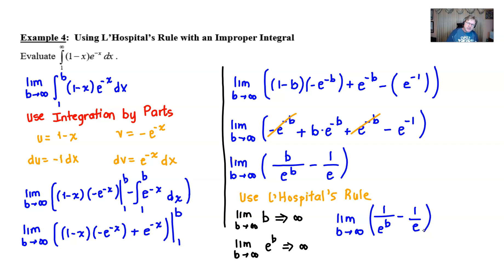And then, as we saw in a previous problem, this e to the b is going to become really big when b becomes infinity. And that's going to force 1 over something really big to become something really small, so close to 0 that we're going to consider it to be 0. And thus, our answer is going to be 0 minus 1 over e. And lo and behold, negative 1 over e is going to be the answer to our indefinite integral.